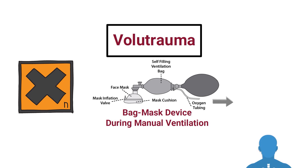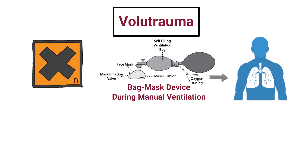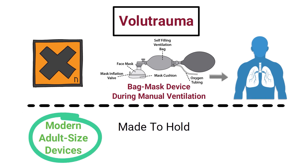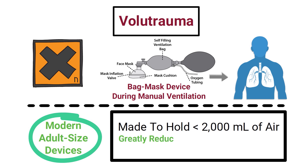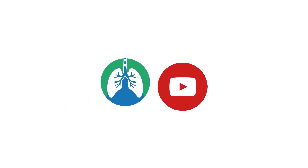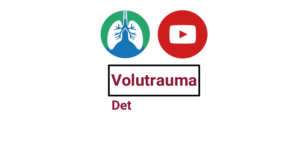Too much air can be squeezed from the bag into the patient's lungs. However, modern adult-sized devices are now made to hold less than 2000 milliliters of air, which greatly reduces the risk of volutrauma under these circumstances.